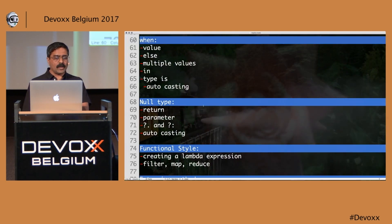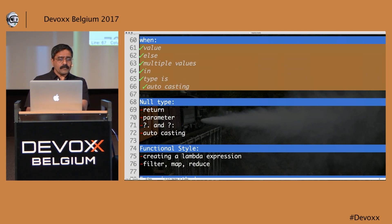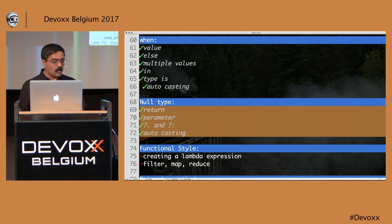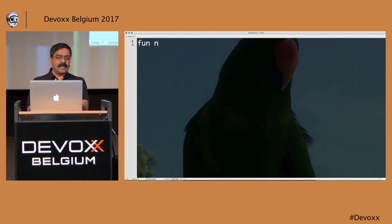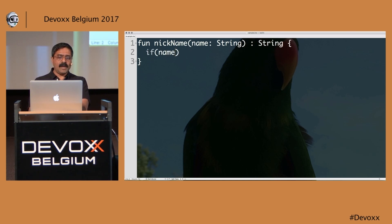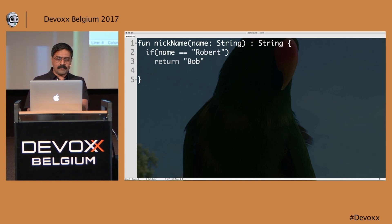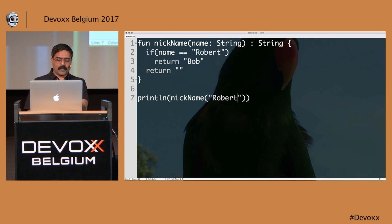Moving forward, we also have null types, which are pretty cool. Null types tell us whether a value could be null or not. For example, I have a 'nickname' function that takes a name and returns a String. If name equals 'Robert', I return 'Bob'. But what about if there's no nickname? For now I'll return an empty string. But what if I want to return null for names with no nickname?